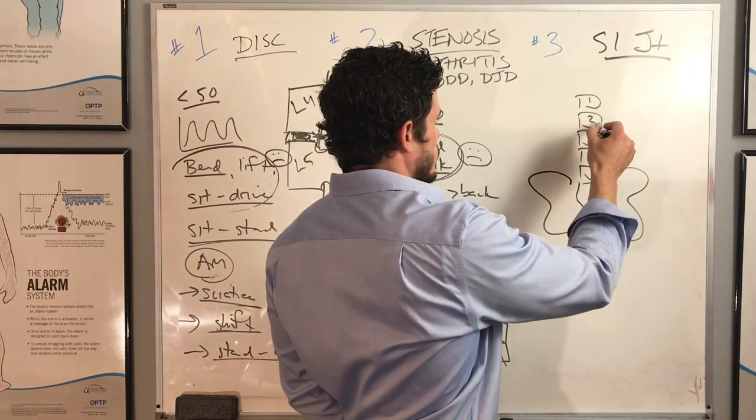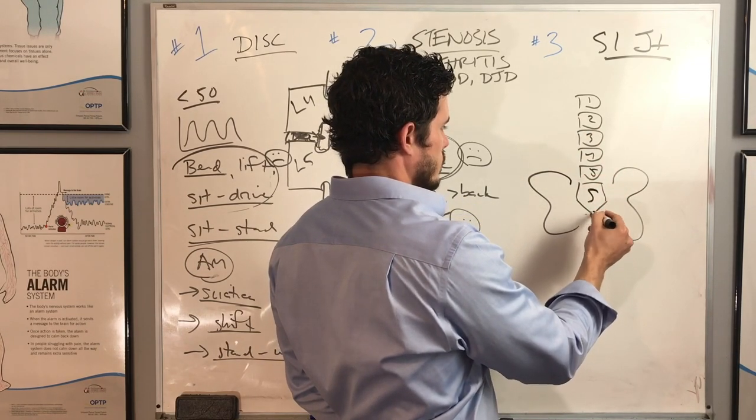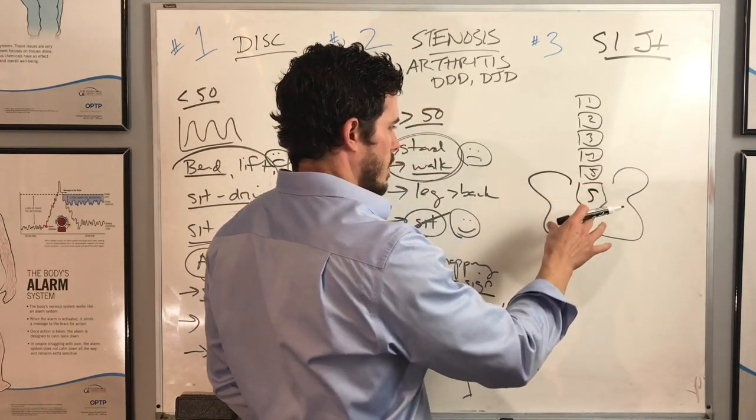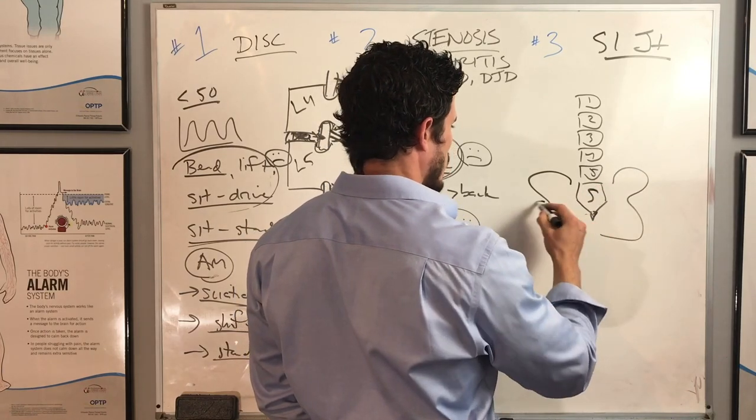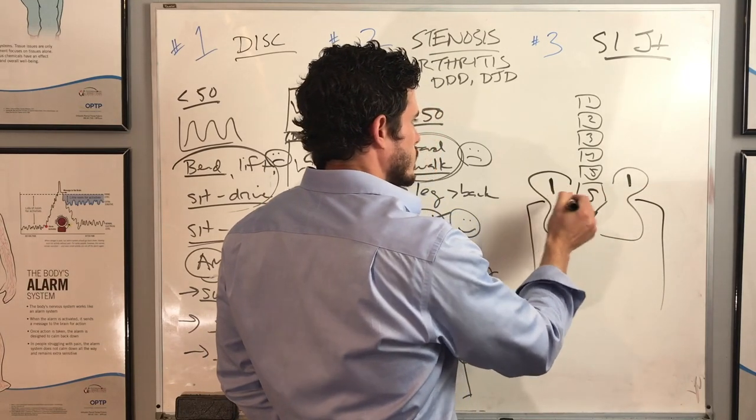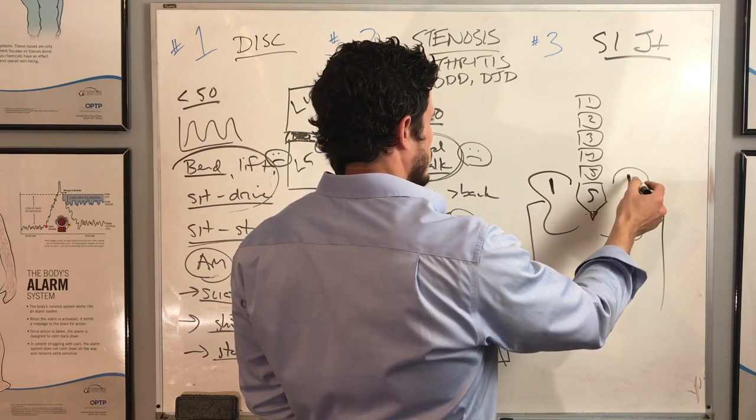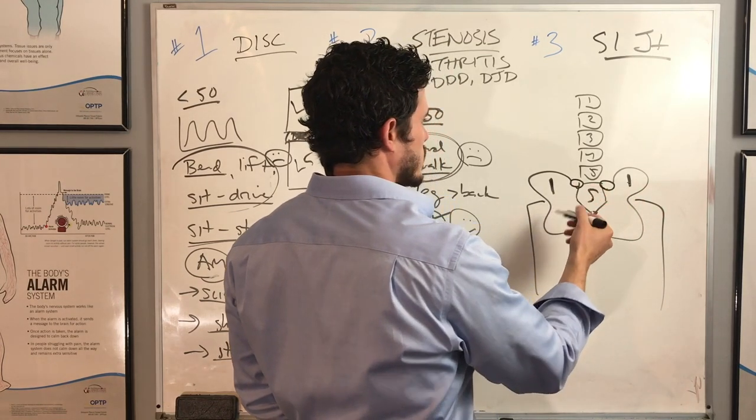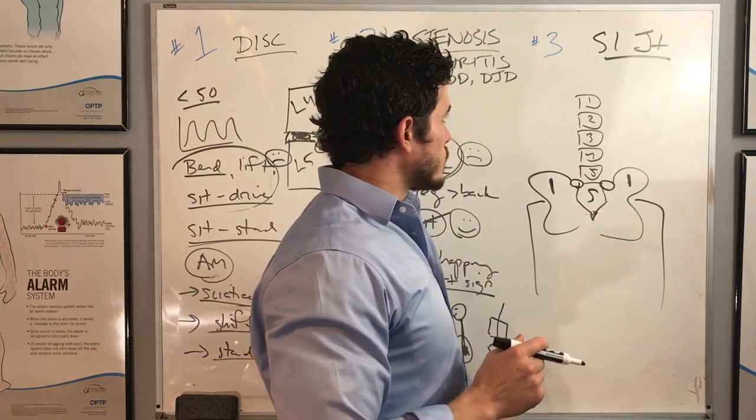So L1, L2, L3, L4, L5, and this is the sacrum. Here would be your little tailbone. The sacrum is just a bunch of fused bones at the base of the spine. And then what you have, these wing-like things, these will be your hip bones. And these, a fancy term, are called ilium. And you can see here, sacroiliac, or SI joint. So the joint is basically the joining between the hip bone and the sacrum.